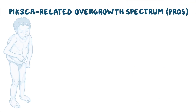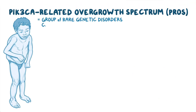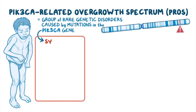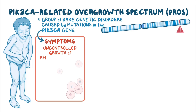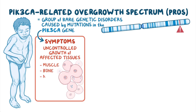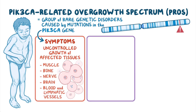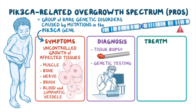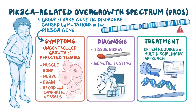As a quick recap: PROS is a group of rare genetic disorders caused by mutations in the PIK3CA gene, which causes uncontrolled growth of affected tissues such as muscle, bone, nerve, brain, and blood and lymphatic vessels. PROS is diagnosed through tissue biopsy and genetic testing, and treatment often requires a multidisciplinary approach.